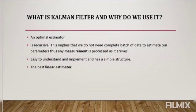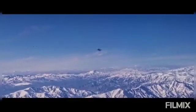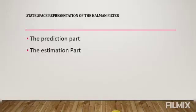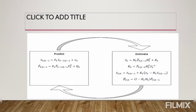The Kalman filter is also the best linear estimator. It consists of two parts: the prediction part and the estimation part. In the prediction part, we have two equations: x(k|k-1) = F(k) * x(k-1|k-1) + v(k), and P(k|k-1) = F(k) * P(k-1|k-1) * F(k)^T + Q(k).